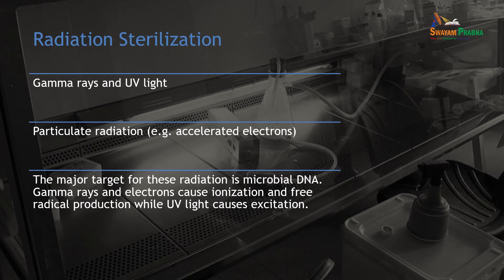Radiation sterilization: with the help of gamma rays and UV light, radiation sterilization is performed. Particulate radiation and accelerated electrons may also be used. The major target is microbial DNA. Gamma rays and electrons cause ionization and free radical production, while UV light causes excitation — by which DNA is destroyed and sterilization of the product is achieved.